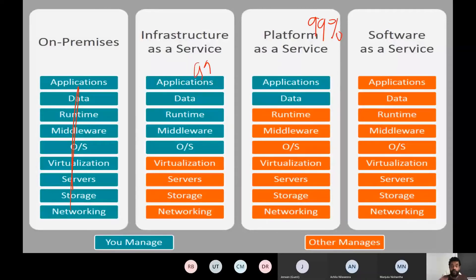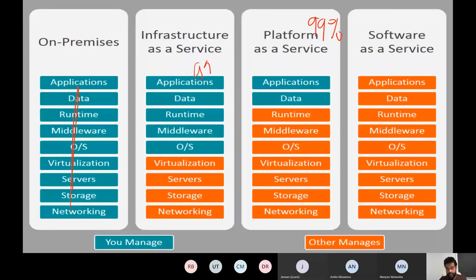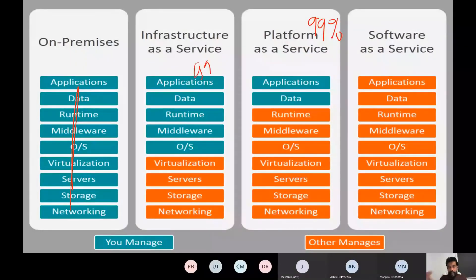We have infrastructure as a service, platform as a service, and software as a service. Infrastructure as a service involves infrastructure creation — for example, virtual machines. Microsoft will look after the premises: access control, security, power, maintenance, everything up to the virtualization level.